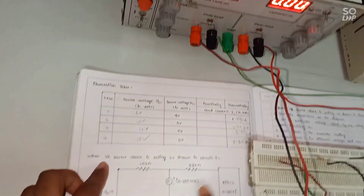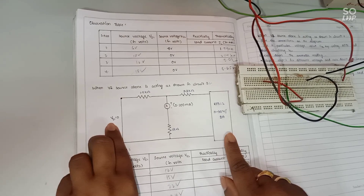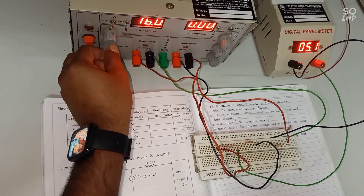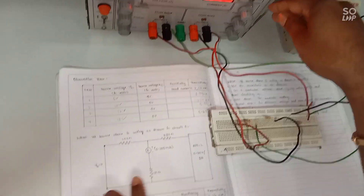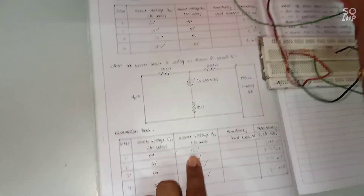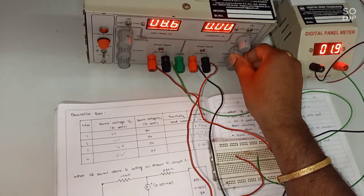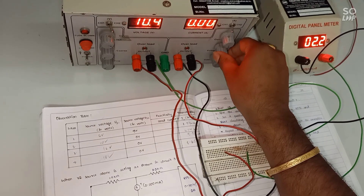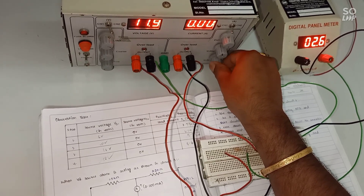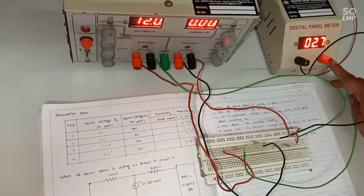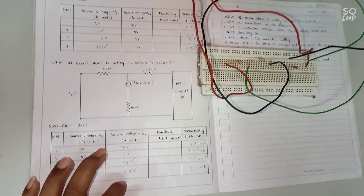Case 2: only VS2 source is acting, and VS1 is replaced by short circuit. VS1 voltage is set to 0 — short circuit voltage. Shift to channel 2. In channel 2, first we are applying 12 volts. Note the corresponding response. Then 15 volts, 22 volts, and 24 volts — note the corresponding responses.